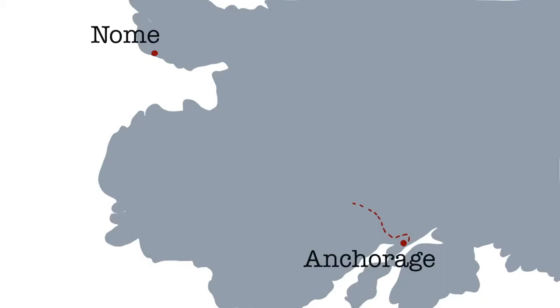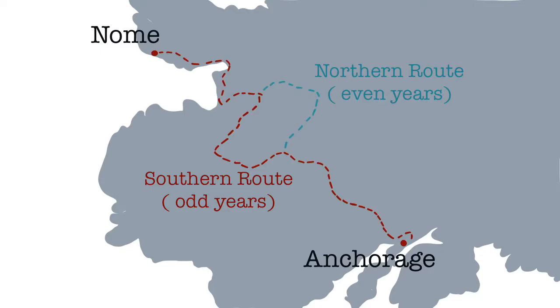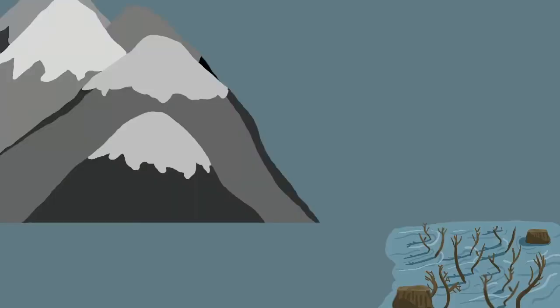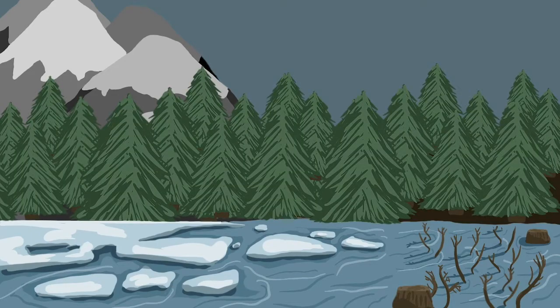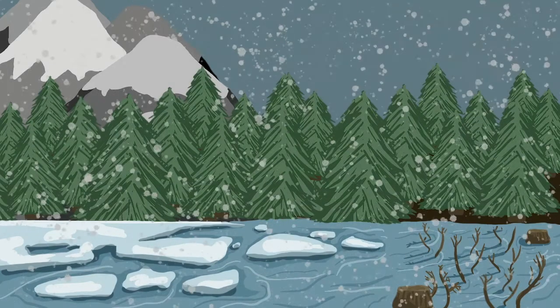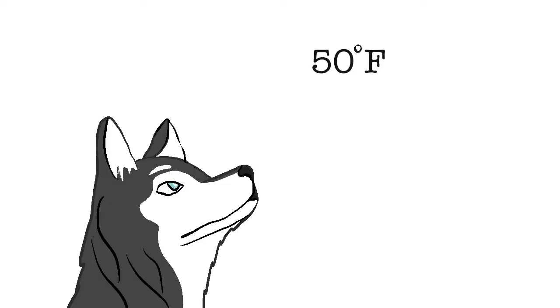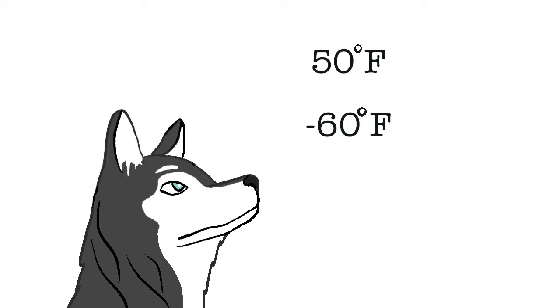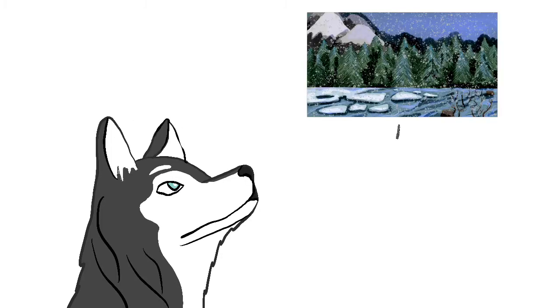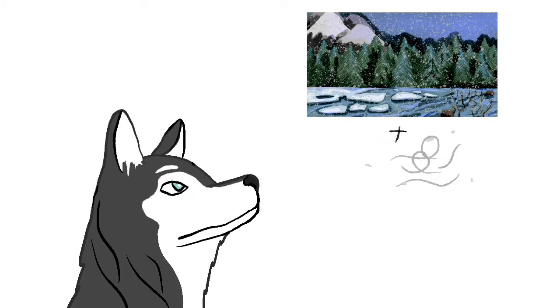There are actually two different Iditarod courses that alternate every year for the modern day race. Both terrains, however, are tough and they pass through hilly terrains, swamps, frozen rivers, and thick forests and the weather conditions can be brutal. Temperatures can range from 50 degrees Fahrenheit above zero to 60 degrees Fahrenheit below zero. That's about negative 51 to 10 degrees Celsius. All of these challenges, in addition to occasional chilling winds and blinding snow, make it a very challenging race.